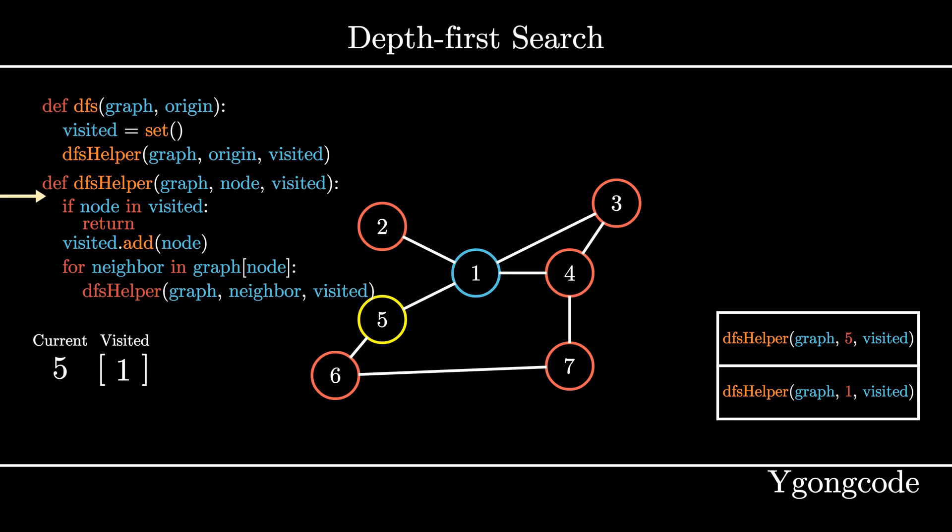At dfsHelper 5, since 5 has not been visited, we add it to our visited set and then proceed to pick one of its neighbors, node 6. Here we call dfsHelper on node 6 and add it to the call stack.